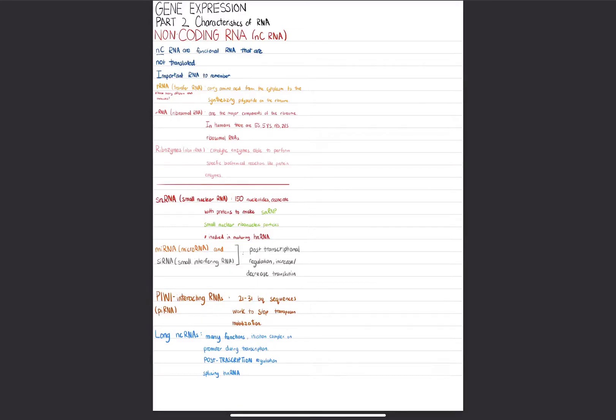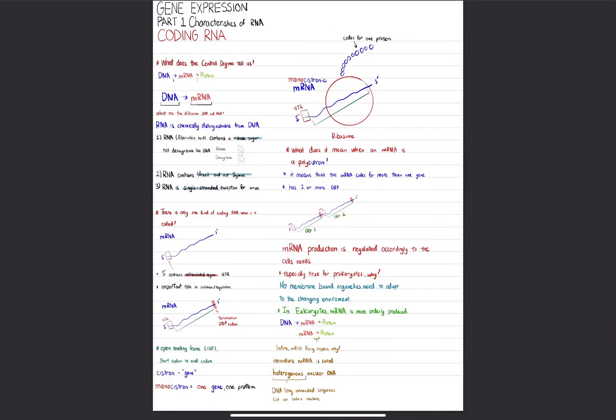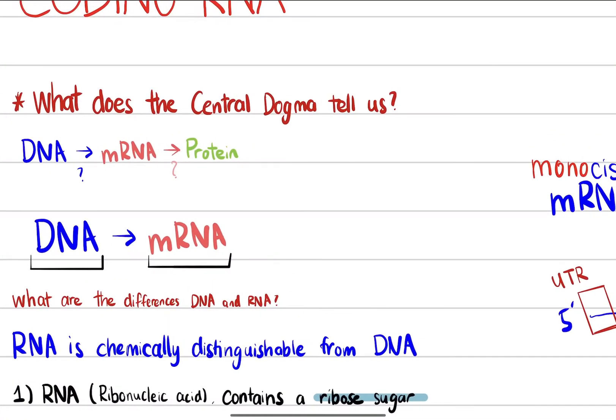Now we're going to talk about non-coding RNA. In the previous video, I discussed coding RNA and the central dogma of molecular biology, which states that DNA goes to mRNA, and then mRNA goes to protein.